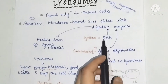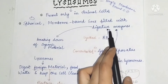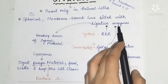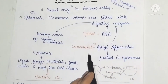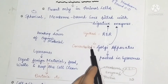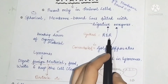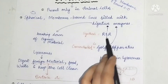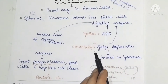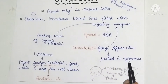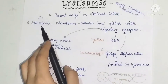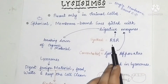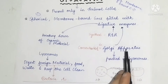The rough endoplasmic reticulum produces these enzymes, and the Golgi apparatus concentrates and modifies them. This digestive enzyme is synthesized in the rough endoplasmic reticulum, concentrated and modified in the Golgi apparatus, and then packed into lysosomes.